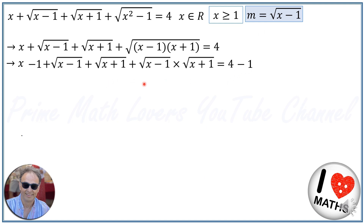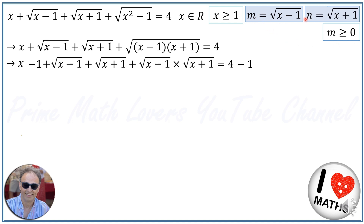Now we apply the substitution method. We let M equal radical X minus 1. When X is greater than or equal to 1, M will be greater than or equal to 0 — so M must be zero or a positive number. The other substitution variable is N, where N equals radical X plus 1. The domain of N is greater than or equal to the square root of 2.